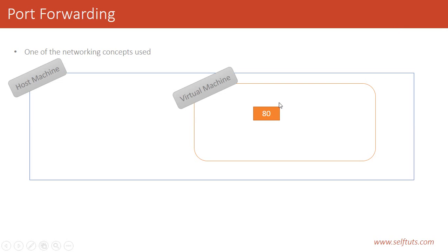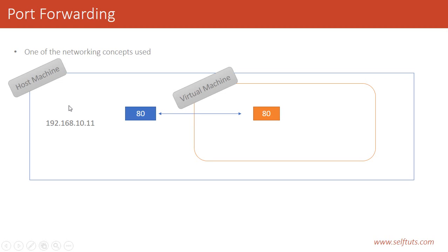Inside our virtual machine we have port 80 which can serve HTTP server pages, and inside our host machine there is also a port 80. Through the port forwarding concept, we link port 80 in our host machine to port 80 in our virtual machine. When we do port forwarding for our Vagrant machine, the same IP provided to our host machine is shared with the virtual machine, but only those ports are visible for the virtual machine which have been port forwarded. So if the IP of our host machine is 192.168.10.11, visiting 192.168.10.11:80 will automatically forward the request to port 80 of the virtual machine.